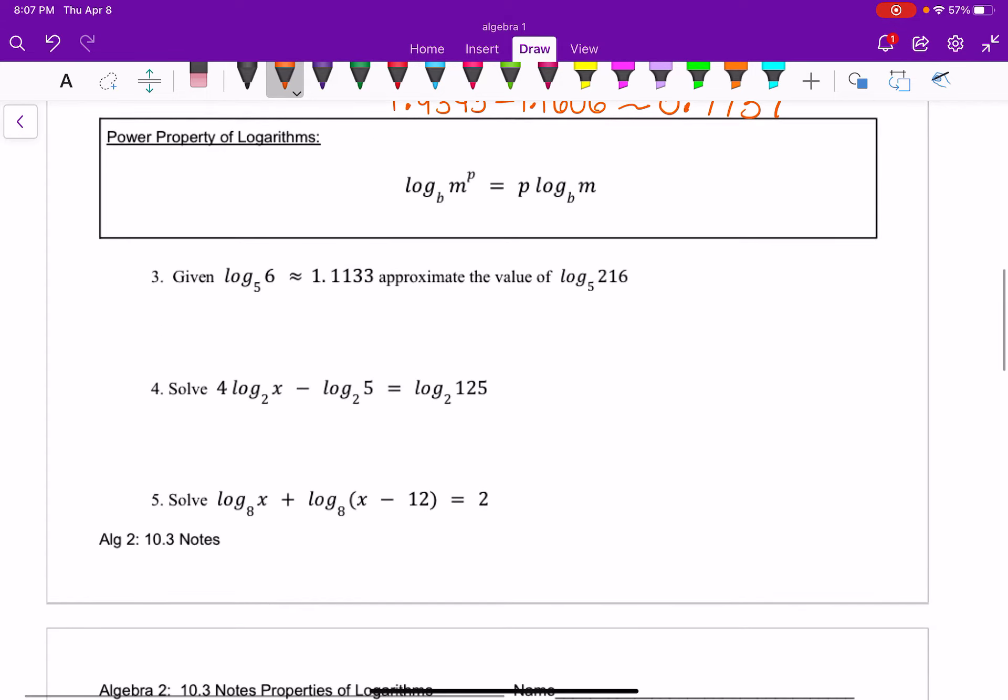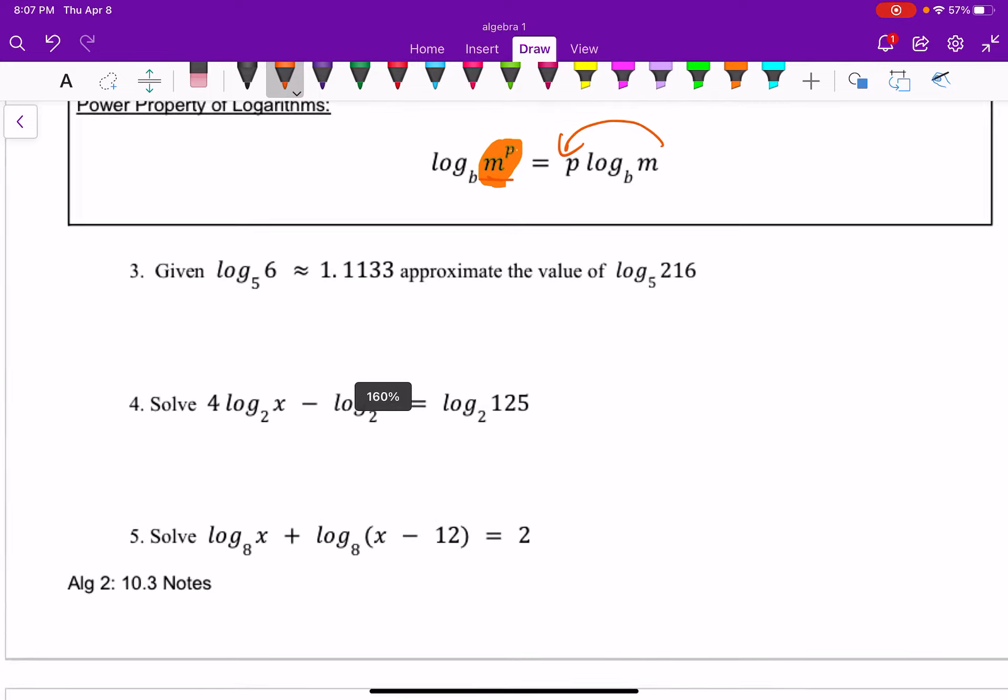Now the next one is just like before. If we had a power to a power, we multiplied. Same thing here. Power to a power, we can put the exponent out front and multiply it. So we're kind of just doing the inverse of what we used to do.